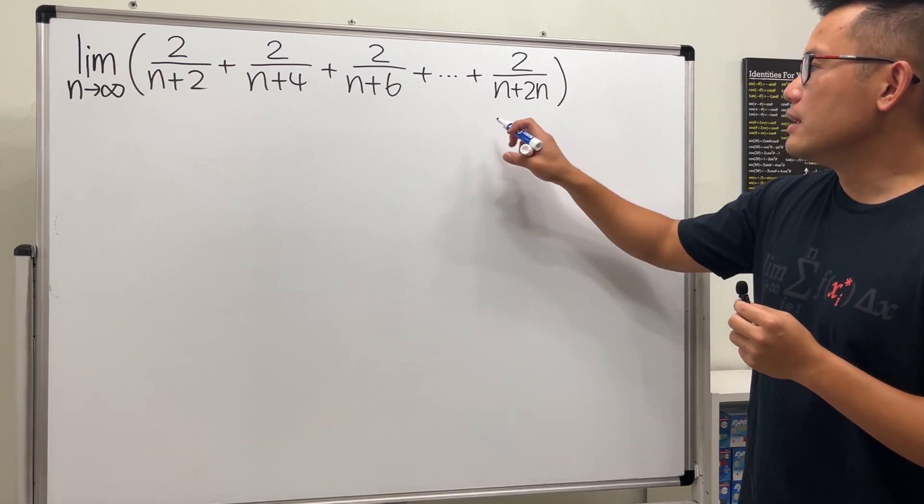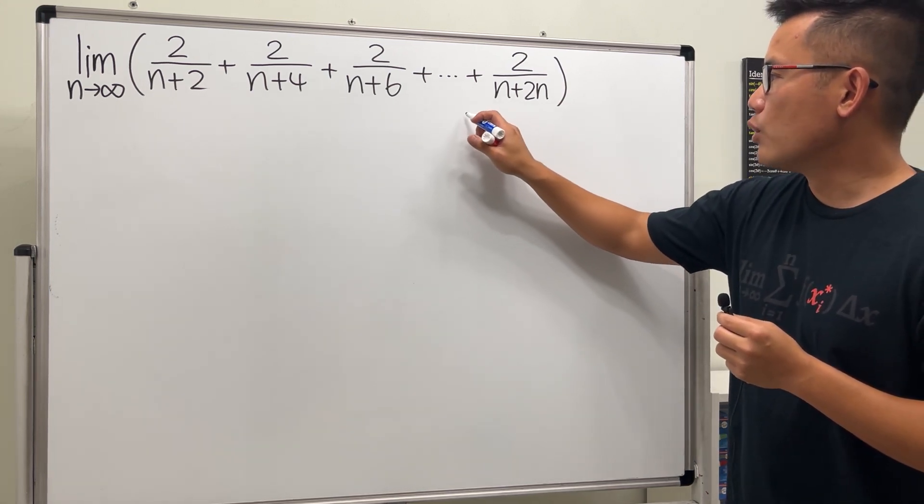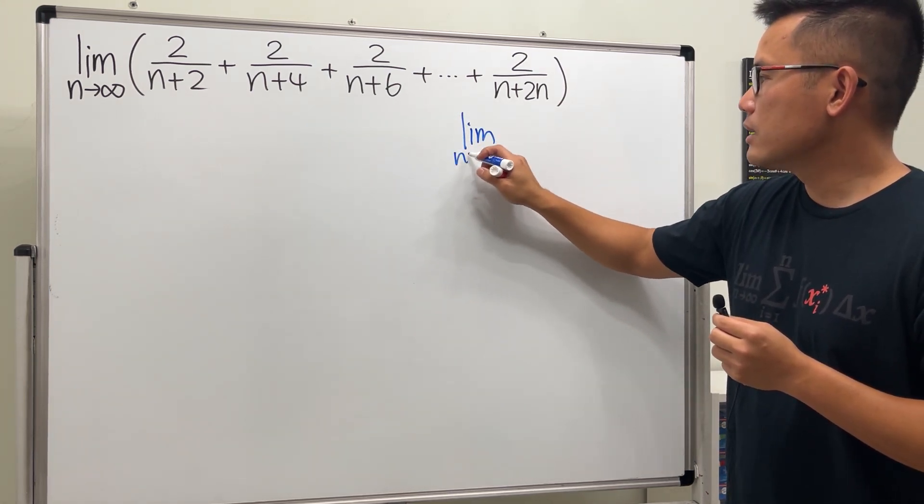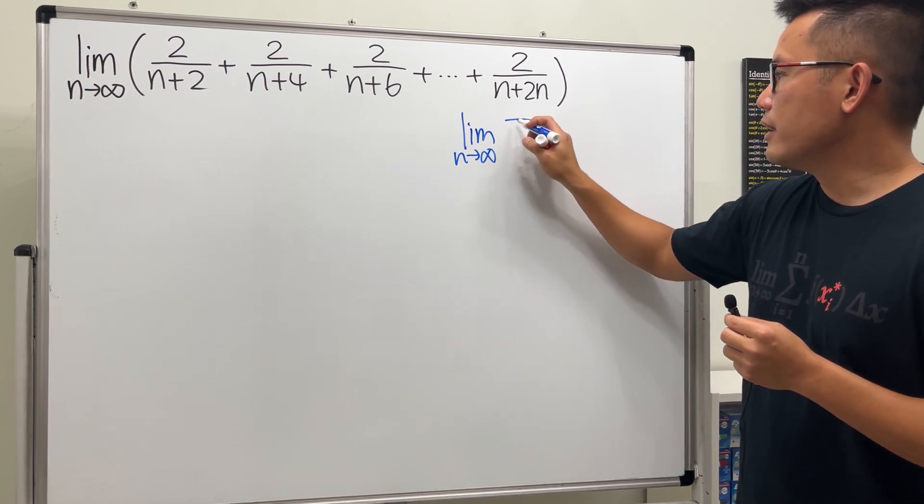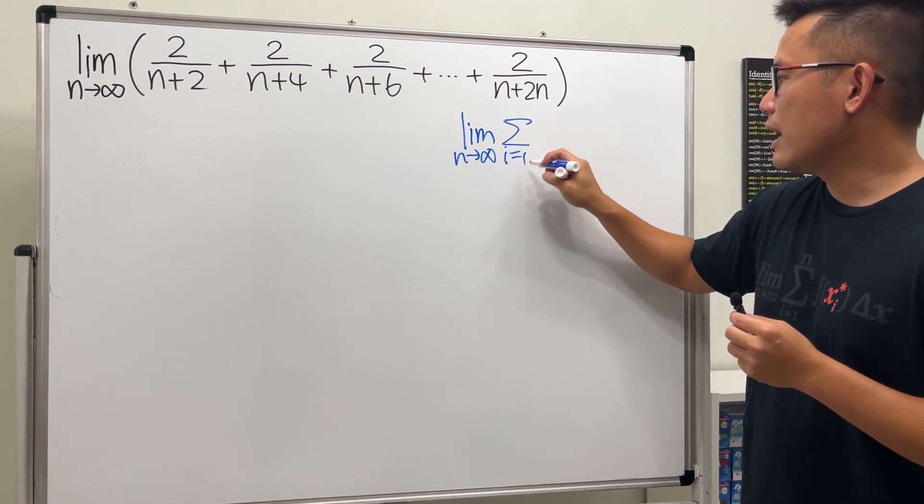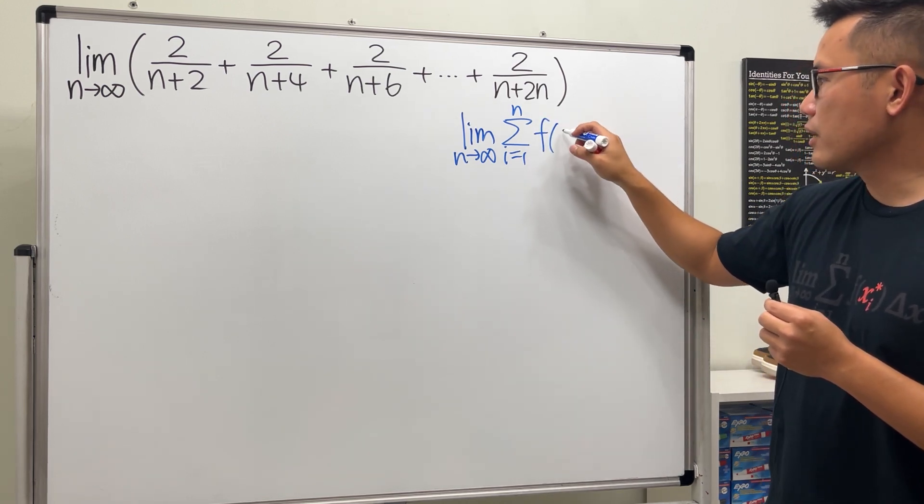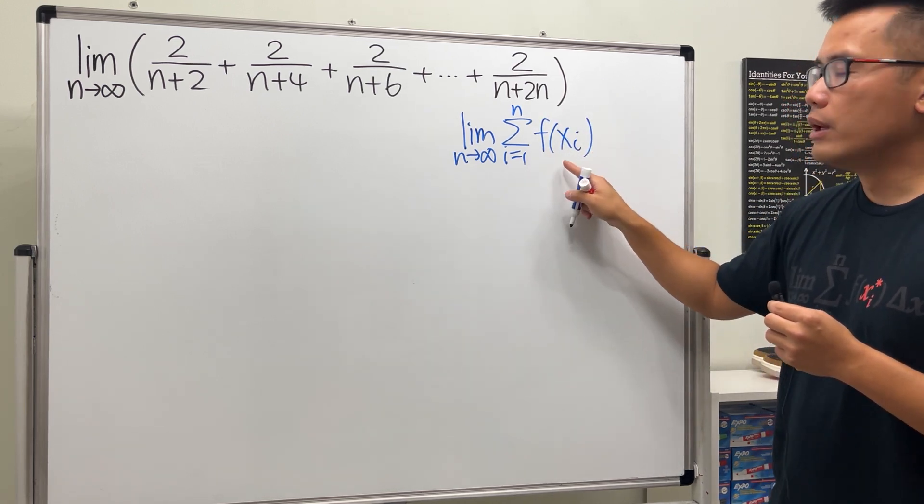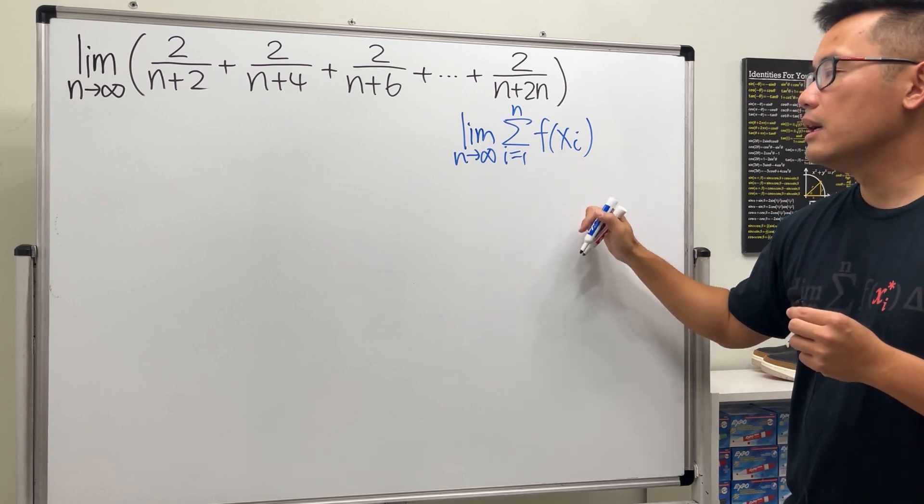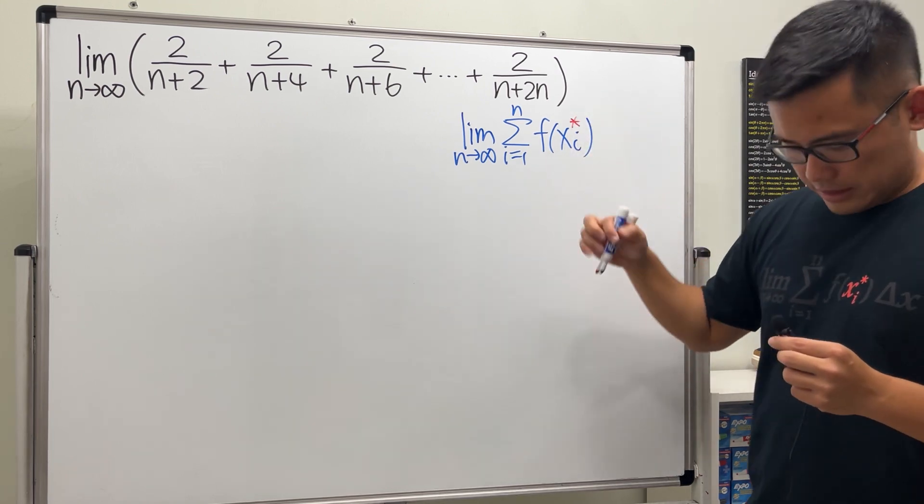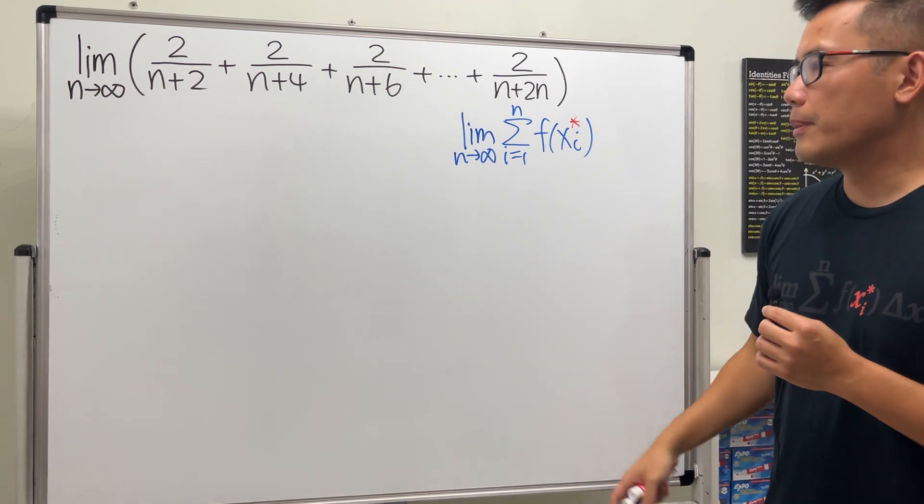The goal is that we are going to first rewrite this in the form of the limit as n goes to infinity, and then the summation. Let's use i for the index, i goes from 1 to n, and then here we need to be able to pick up the function, and the notation for now is just f of xi star.